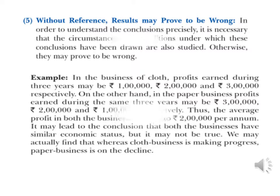Fifth limitation: without reference, results may prove to be wrong. Without reference, whatever result we calculate can be wrong. In order to understand the conclusion, it is necessary that the circumstances and conditions under which these conclusions have been drawn are also studied; otherwise, they may prove wrong.